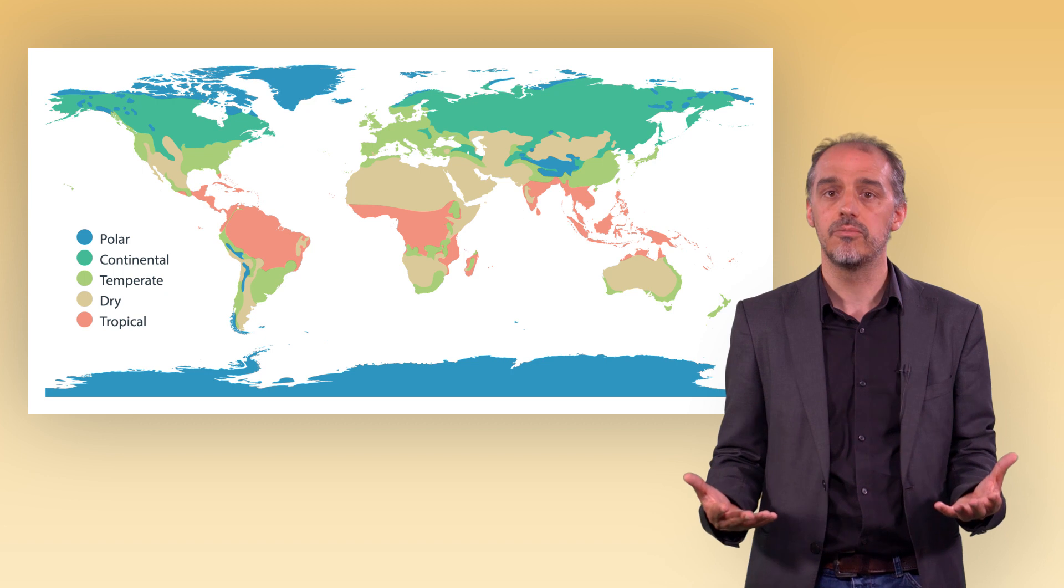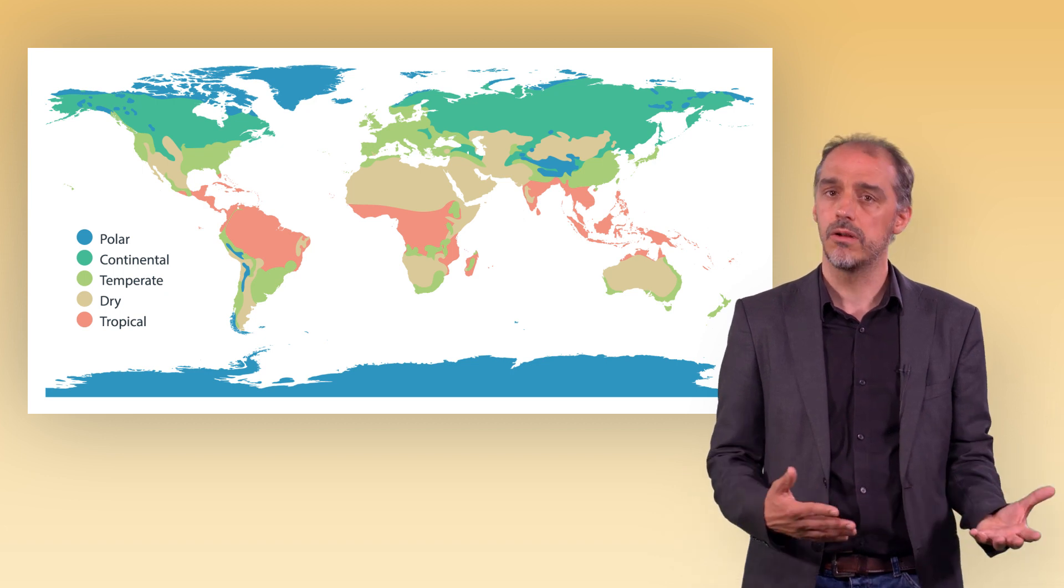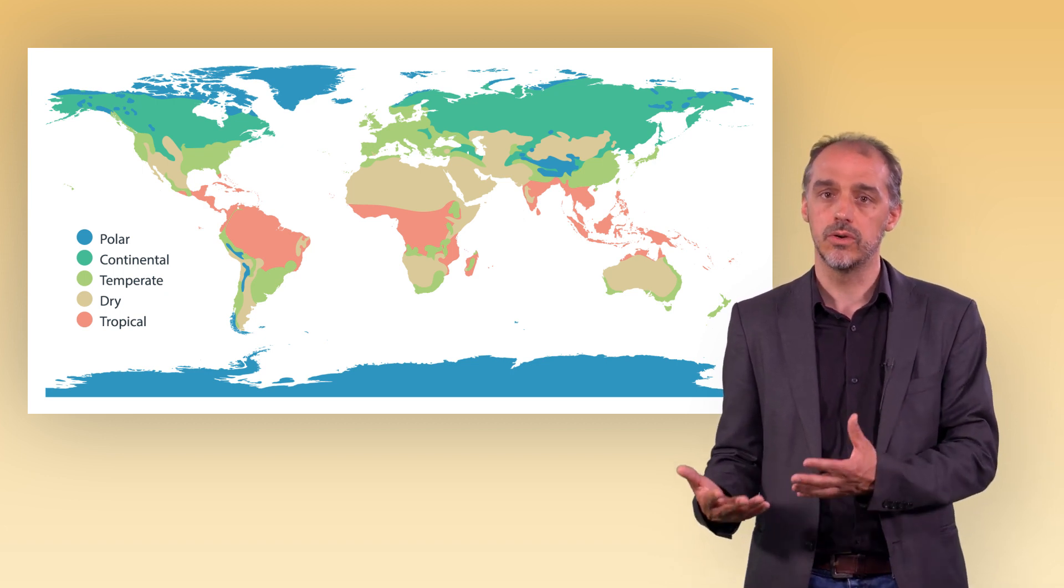Several climates may be defined on Earth in different regions. This classification, for instance, defines five main climate types: tropical, dry, temperate, continental, and polar.